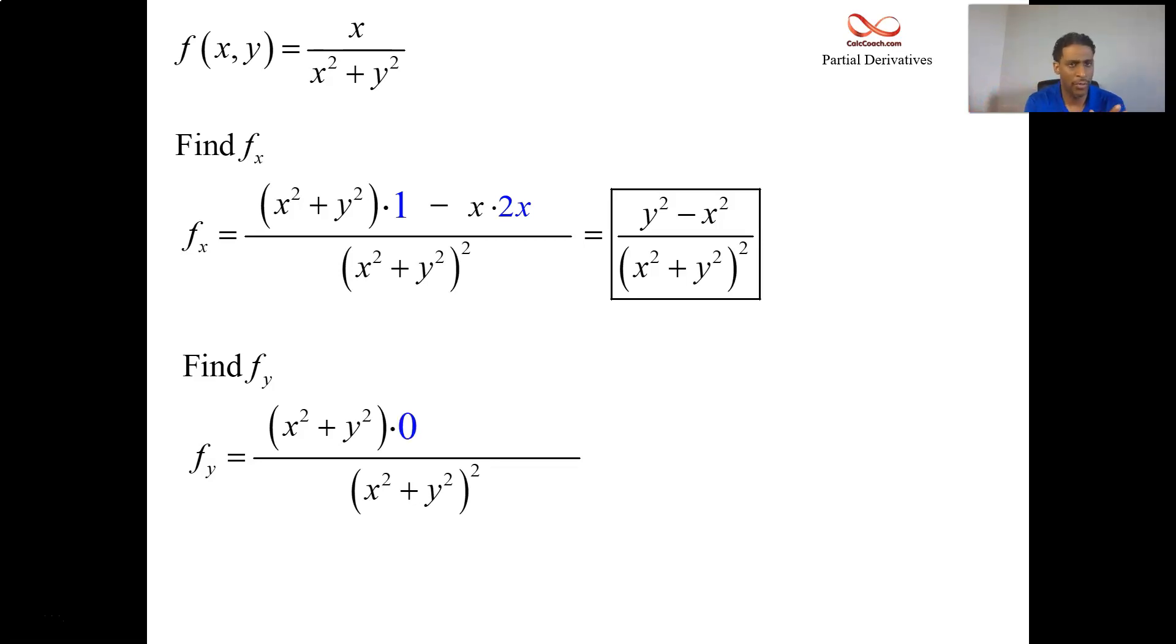You lose half the numerator. You put the minus sign, you work with the other half. Leave the numerator alone, and you take the derivative of the denominator, the original denominator with respect to y. So 2y. Then you just end up with -2xy as your numerator.